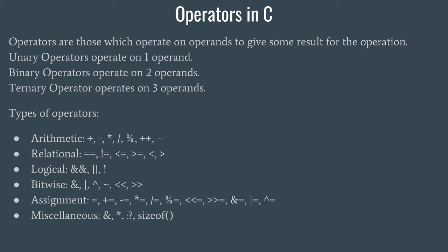First of all, let us understand what operators are. Operators are those which operate on operands to give some result for the operation. We have some expression; in that expression we will have certain operators and certain operands. When that entire expression is evaluated it gives us some result, and the function performed in that expression is known as the operation.